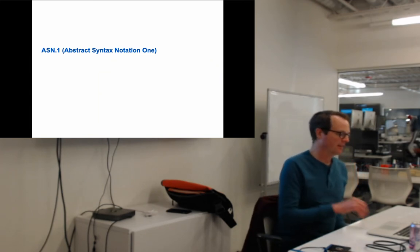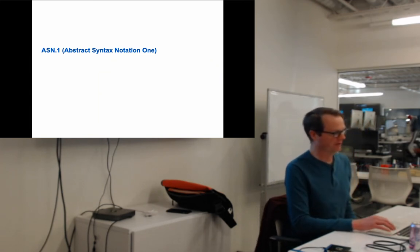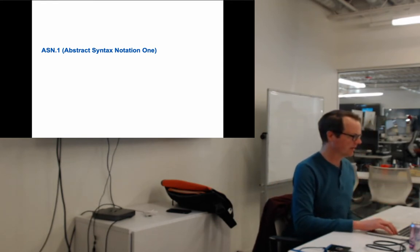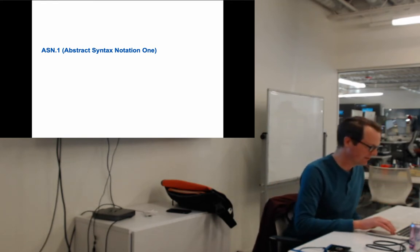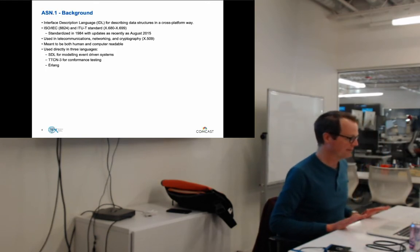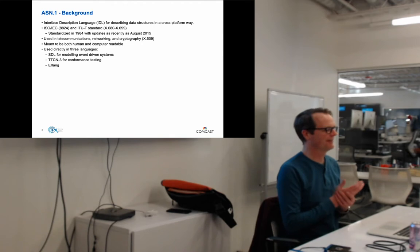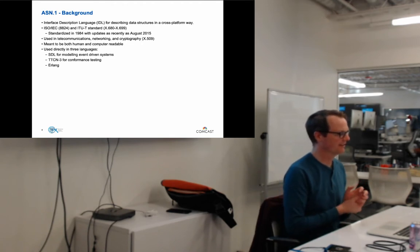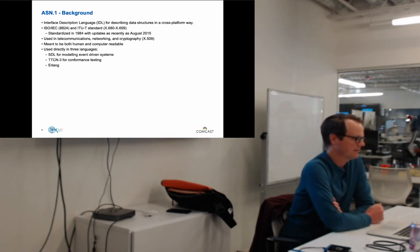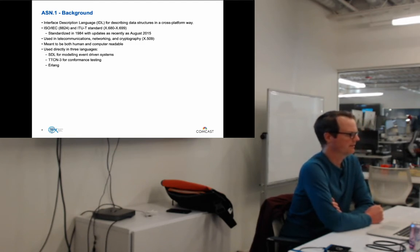We're going to dig into ASN.1 first — from ancient history to modern history. ASN.1 is a very, very old telecom spec. It became a standard in the 80s — 1984 — and it's an ISO/IEC spec. It's also an ITU spec, though ITU doesn't call them specs, they have 'recommendations.'